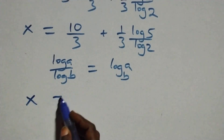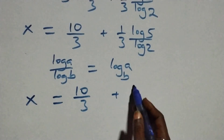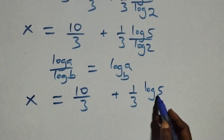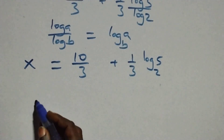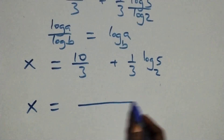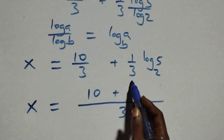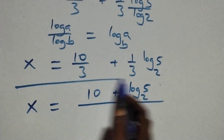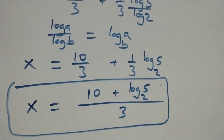So we have x equals 10 over 3 plus 1 over 3 log base 2 of 5. Bringing this together as one fraction, x equals 10 plus log base 2 of 5, all over 3.